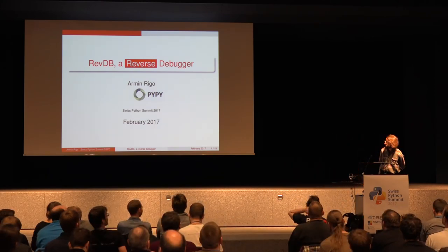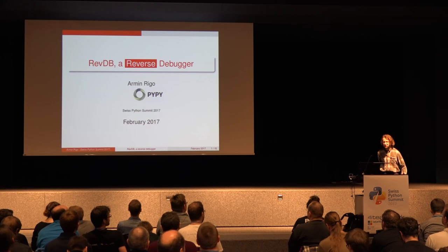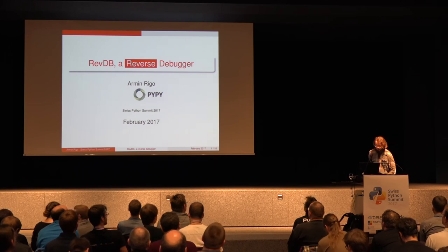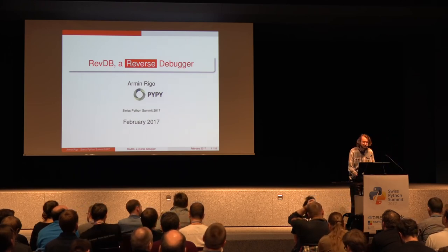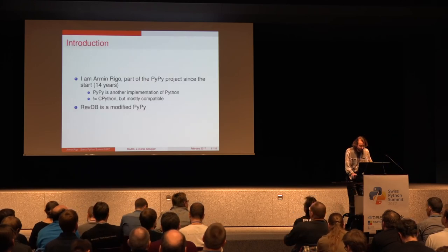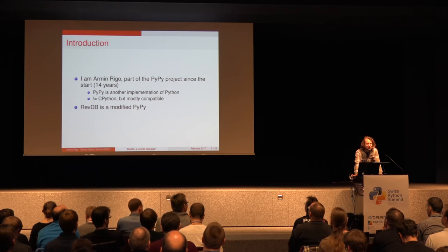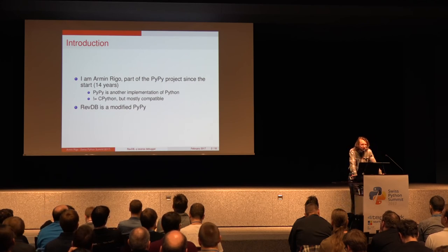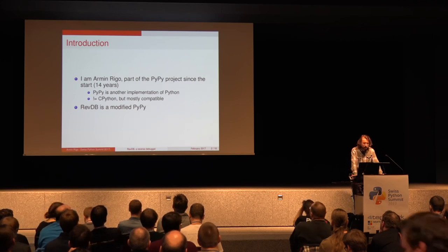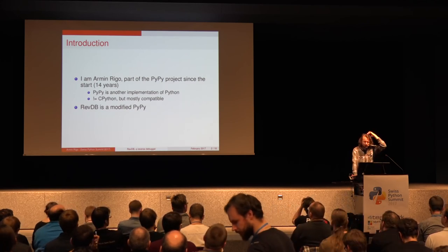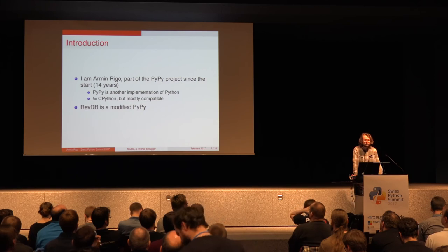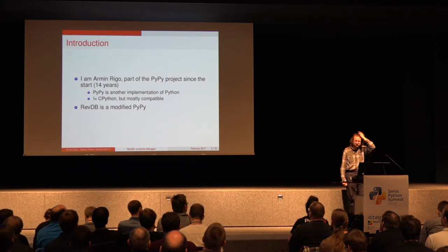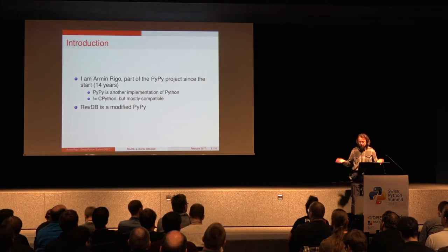This talk is about reverse debugging. First, a bit of introduction. I'm Armin Rigaud, and I'm part of the PyPy project. PyPy is 14 years old — it's an alternative implementation of Python that focuses mostly on performance. If you have a Python program, like a Python 2.7 program, you can try to run it in PyPy instead of the standard CPython, and maybe it will be five times faster. That's the goal of PyPy.